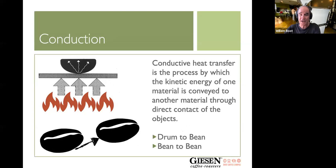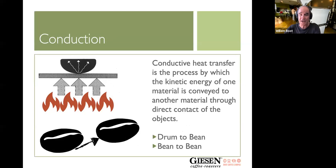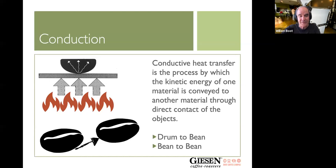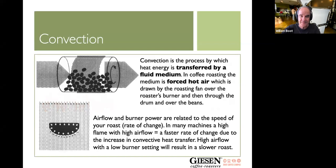This whole topic of heat transfer leads into the discussion of what type of heat transfer you want to produce — conductive heat, convection heat, or radiation heat. Each of these heat transfer principles will have its own outcome on the roasting process. Conductive heat is the heat by touch — it's the heat you perceive when you touch something. Most Giesen roasters have double-wall drums.